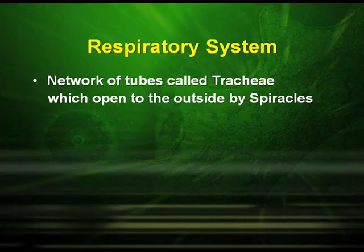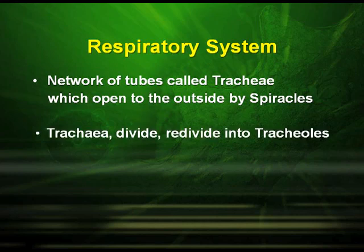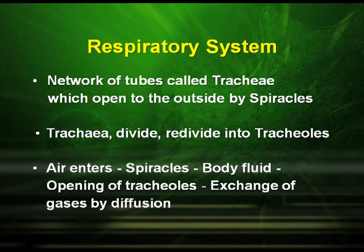The respiratory system of cockroach is a network of tubes called trachea, which open to the outside by spiracles. These trachea divide and re-divide into tracheoles. The air enters the spiracles, which enters the body fluid and then to the opening of the tracheoles, thereby bringing about the exchange of gases by diffusion.